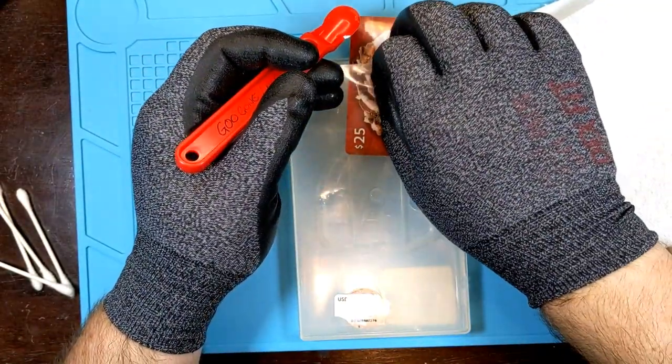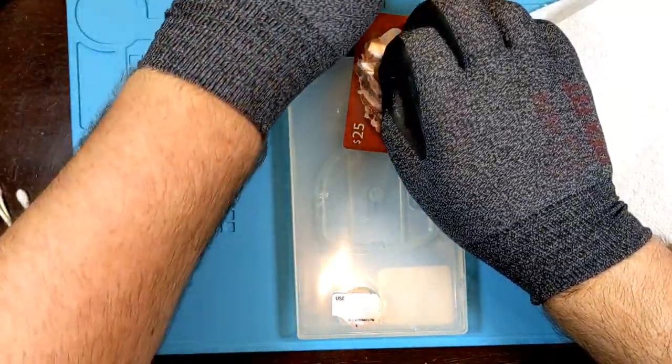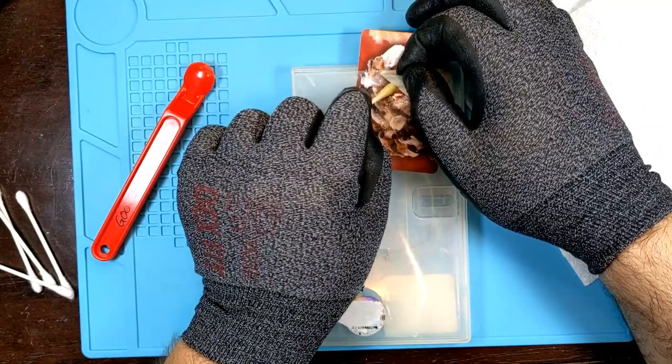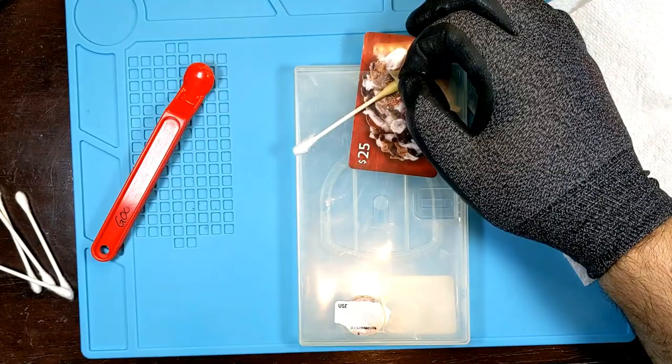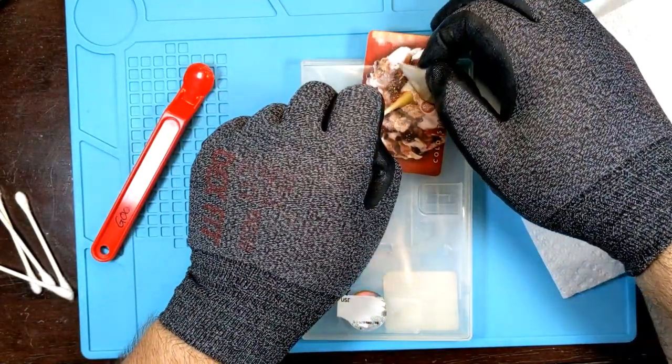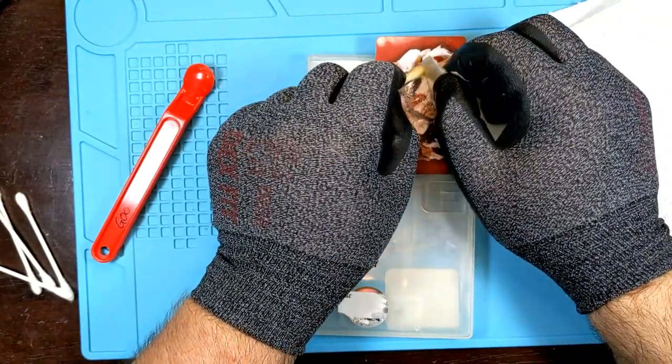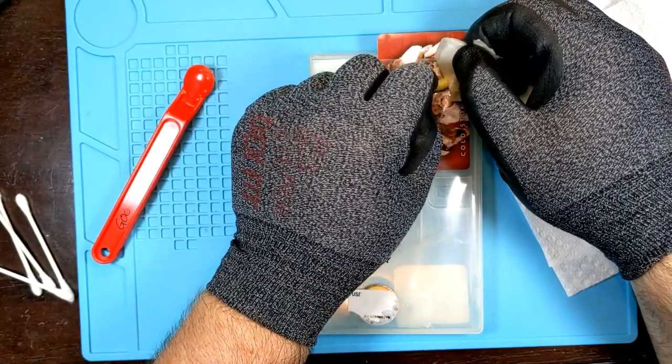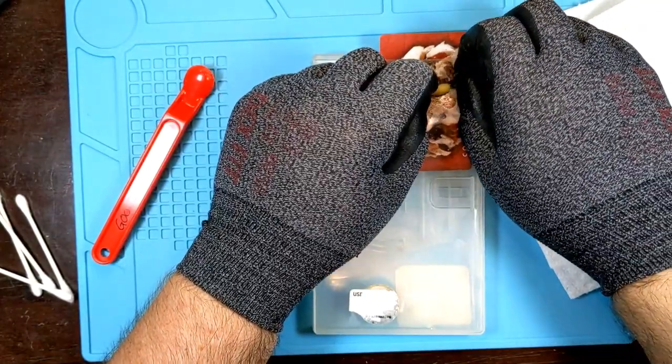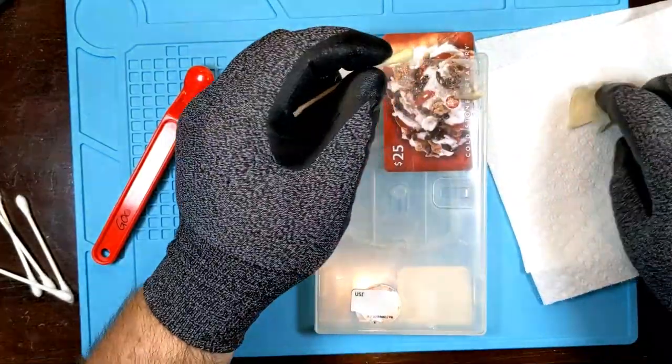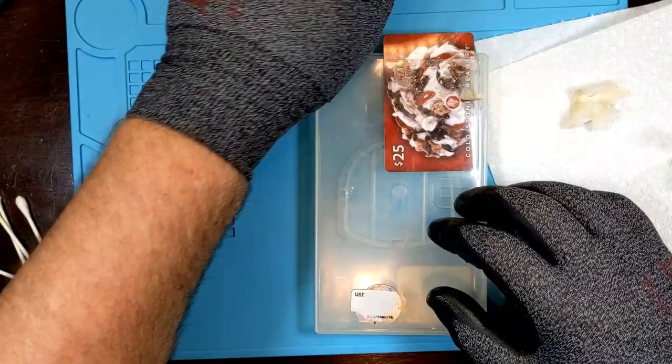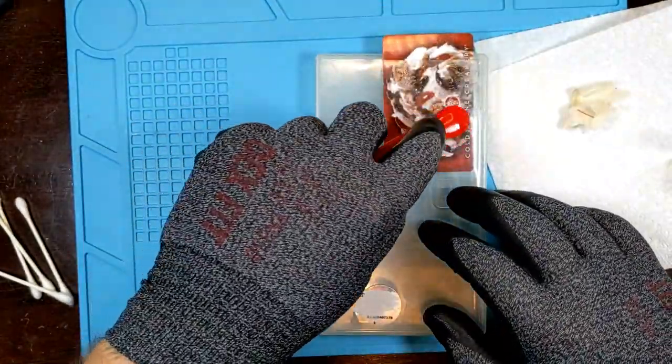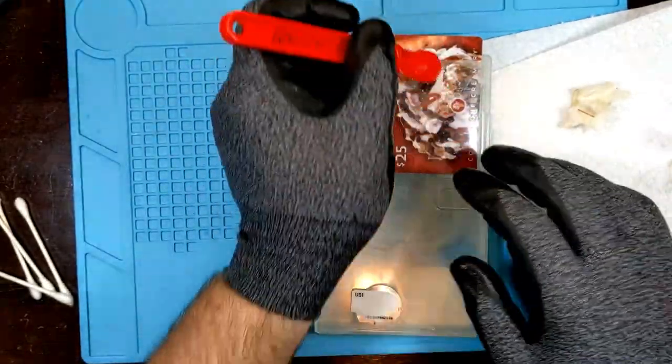So once I get a good chunk of it up that I can actually pull on it, I start to pull it up. And then as I'm pulling it up, I will take the Goo Gone and rub it directly underneath and against the creasing as much as I can. And you'll want to reapply it pretty regularly because the Q-tip itself will start to get more and more filled with junk.